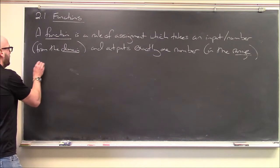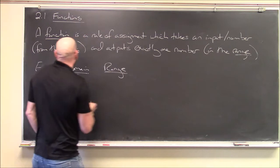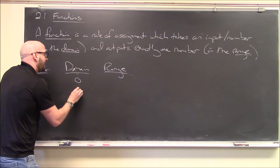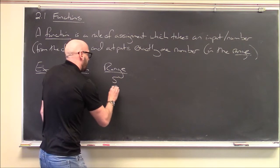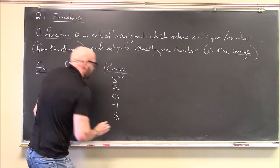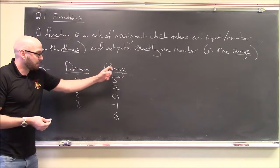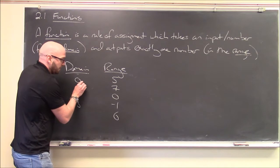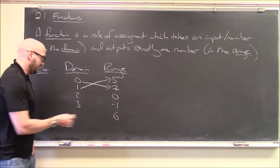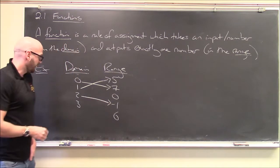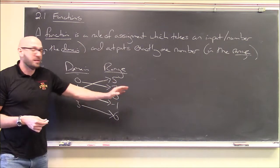Our functions won't usually be given tabularly, but just to illustrate a point, here's an example. My domain allows inputs 0, 1, 2, and 3. My possible outputs are 5, 7, 0, −1, and 6. So I plug in 0 and output 7; plug in 1 and output 5; plug in 2 and output −1; plug in 3 and output 6. Notice none of these inputs gives 0 as output — that's fine. This is a function.